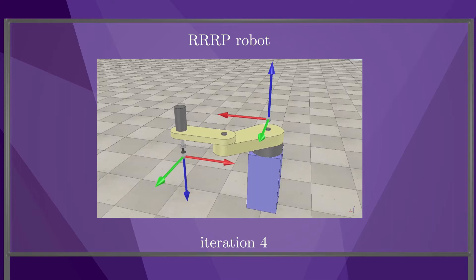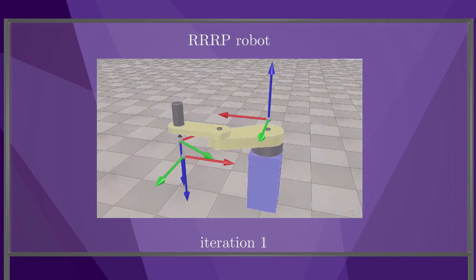Of course, in practice, the robot would not actually move until it has calculated a solution. The animation here just visually demonstrates the iterations. Let's watch the animation one more time.